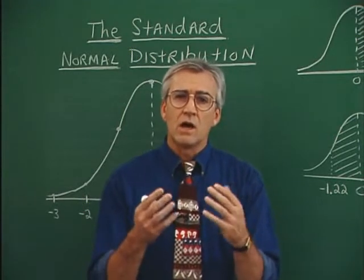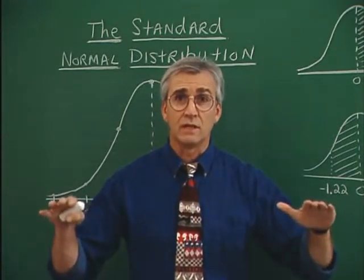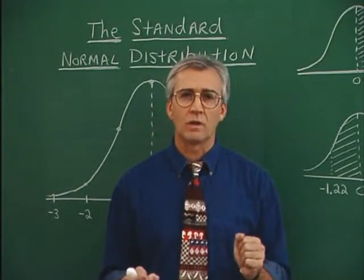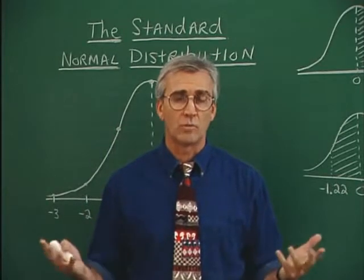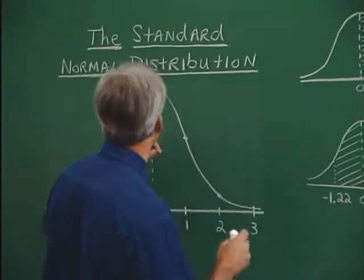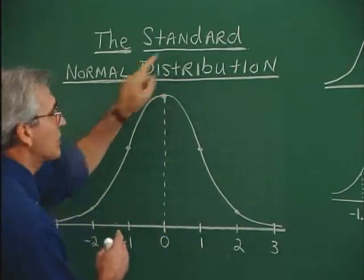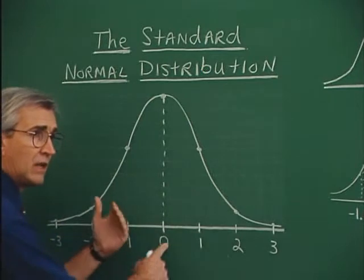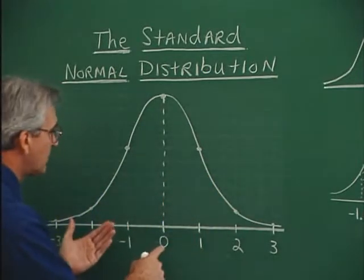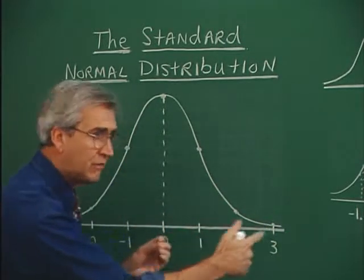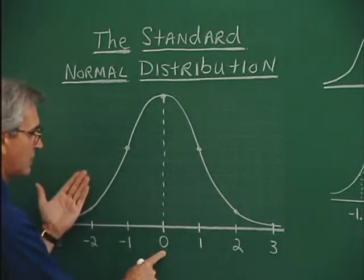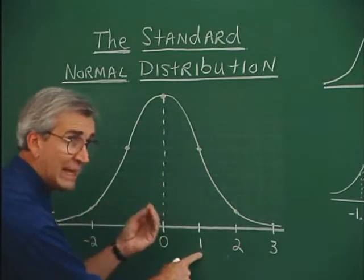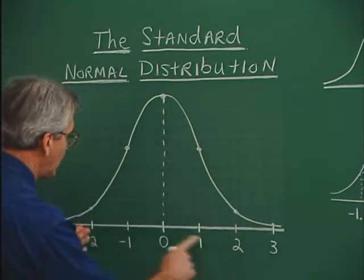Z-scores can help us immensely. We can level the playing field with all normal distributions by converting them to a z-distribution. If the x-distribution is normal, then the corresponding z-distribution will also be normal. In the standard normal distribution, the mean is at zero — because z = (μ - μ)/σ = 0. The values 1, 2, 3 and so on along the horizontal axis are z-scores, representing distances in standard deviations. Area and probability under this curve work just as before.